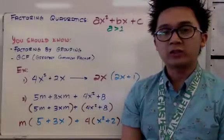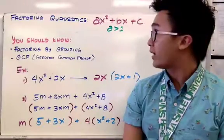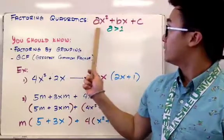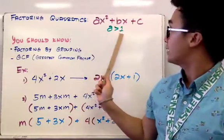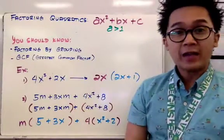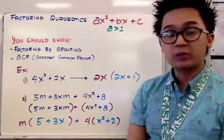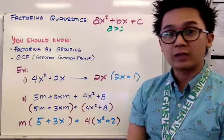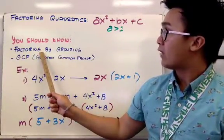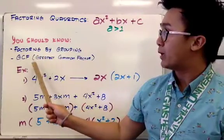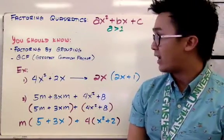Now we're going to learn how to factor quadratic equations wherein the quadratic term has a coefficient that is more than one. The factoring techniques you should know to factor quadratic equations like this are factoring by grouping and factoring using the GCF.